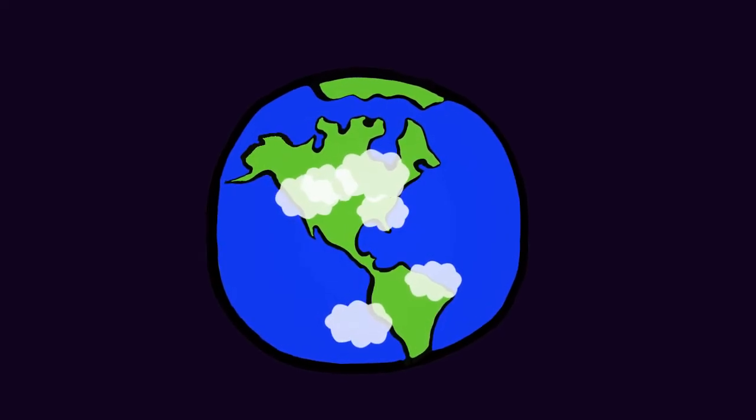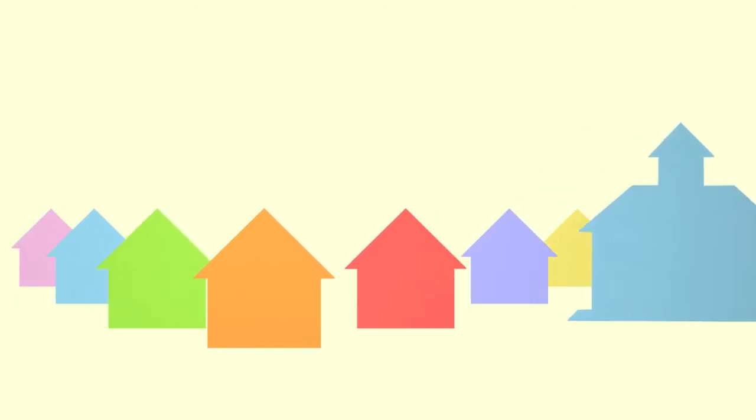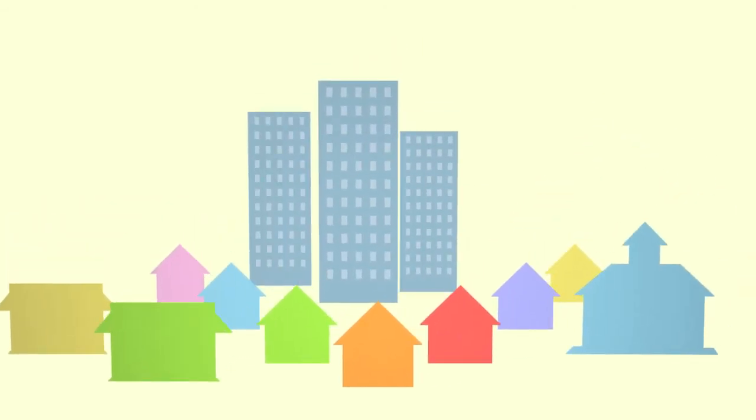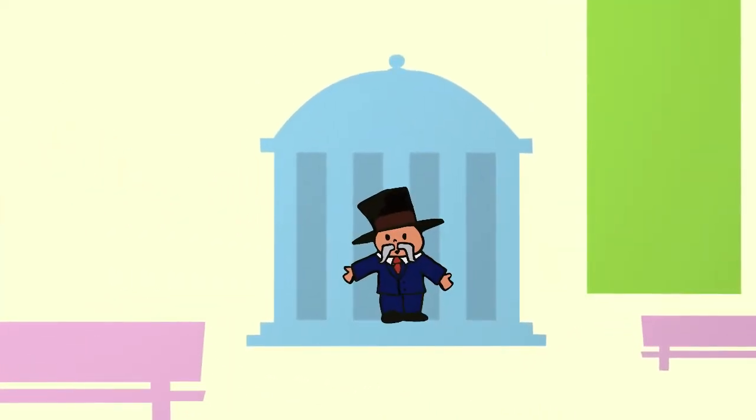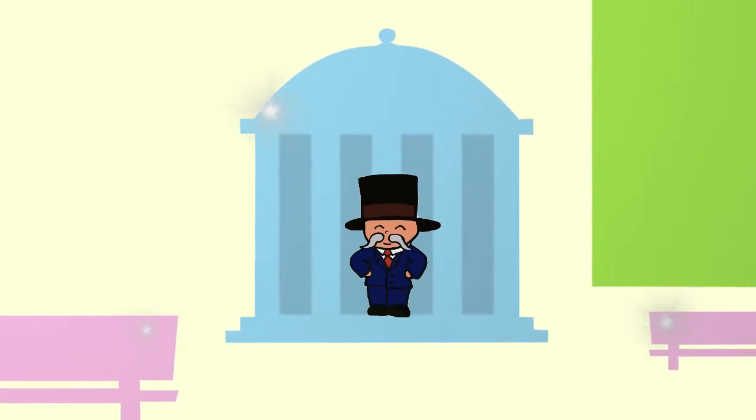We all share this place we call Earth. Most of us live near other people, in towns and villages and cities. We have private places we call our own and public places we share with others. We choose people to manage these public places and take care of them for us.